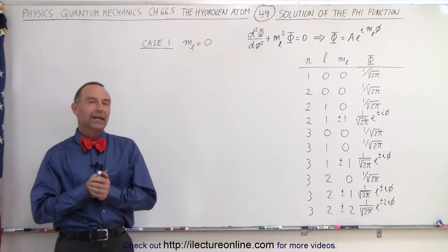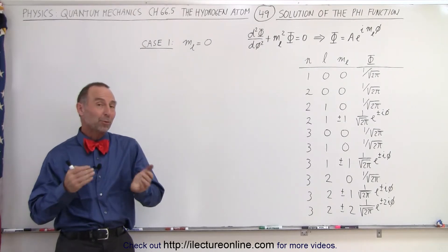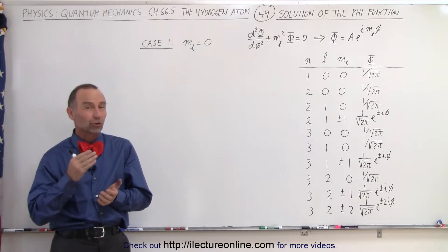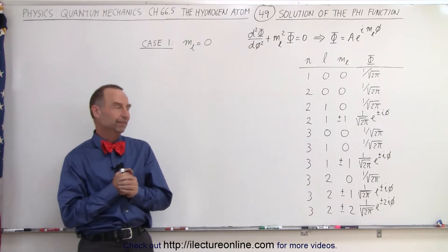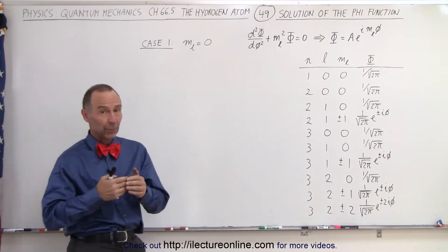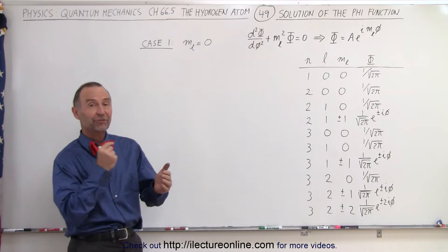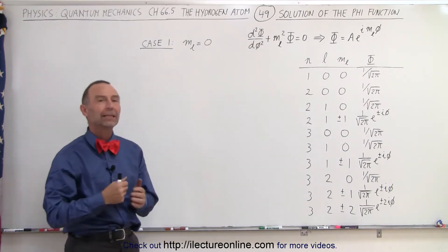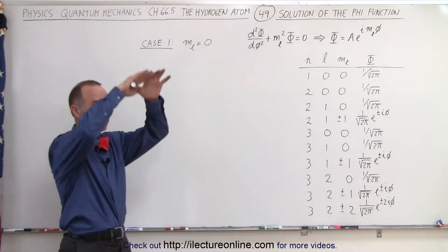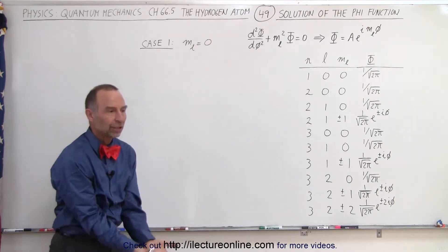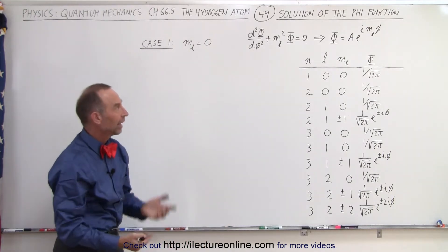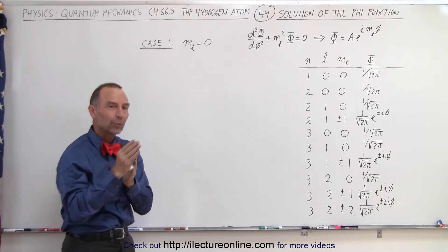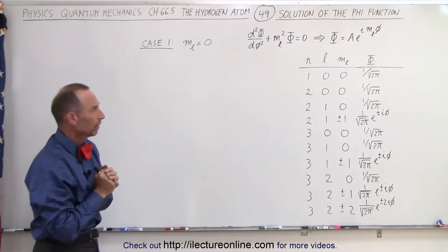Welcome to our lecture online. We're ready to start looking at the solutions of the Schrödinger equation for the hydrogen atom. Remember that we have three functions: one for phi, which is the orbit in the x-y plane; one for theta, which is the motion in the z direction; and one for the distance away from the nucleus in the radial motion outward, r.